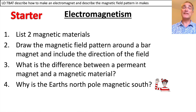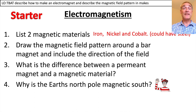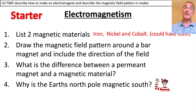Let's go back to a starter which links into last lesson looking at magnetism. Magnetic materials include iron, nickel, and cobalt. Steel is also a magnetic material but it's not an element — it's called an alloy because it contains iron and carbon.